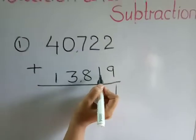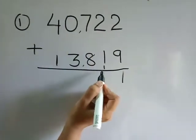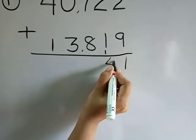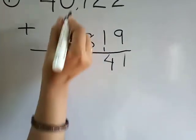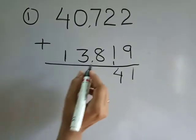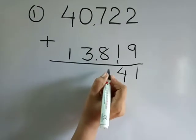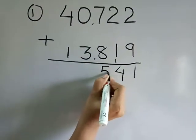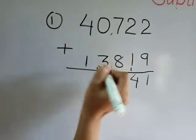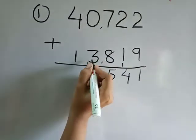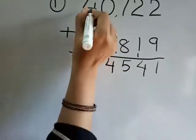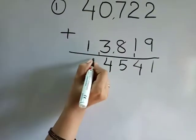Two plus one is equal to three, three plus carry one is four. Seven plus eight is equal to fifteen — five right here and one is carry. Zero plus three is three, three plus carry one is four. Four plus one is five.